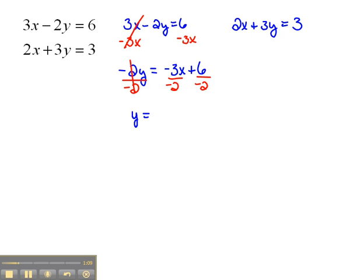So y will equal negative divided by negative is positive, so this would be 3 halves x. We can't reduce that down any. Here, this will actually divide nicely. A positive 6 divided by a negative 2 is a negative 3. So the slope here for this line is 3 halves. Remember, your slope is what's in front of the x in that position.